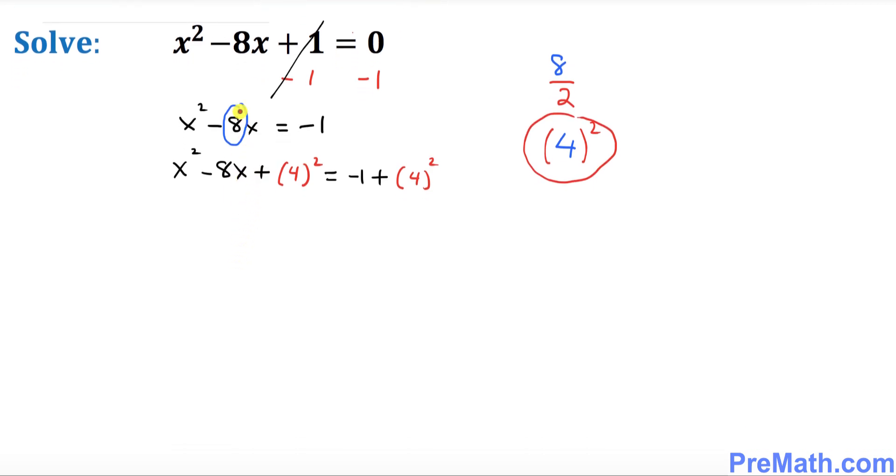Now look at the left hand side. This part only. This represents a complete square of x minus 4 squared. Now you might be wondering where this came from. Well, x is always going to be going over here. This number 4 is going to be going on this end. And whatever this sign is, negative or positive, that shows up in the middle.